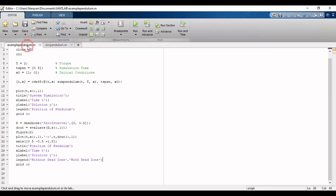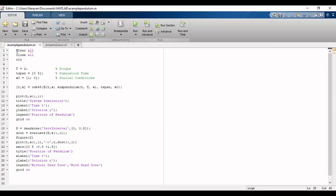Now to simulate this model we will open a new file and start with some basic clearing instructions, and then we will define input torque, total simulation time, and initial conditions of the simple pendulum. Then we will use ODE45 command to simulate the system and we will use the plot function to analyze the position of the simple pendulum.